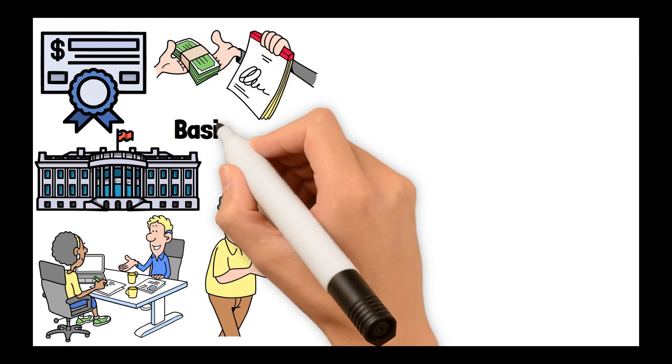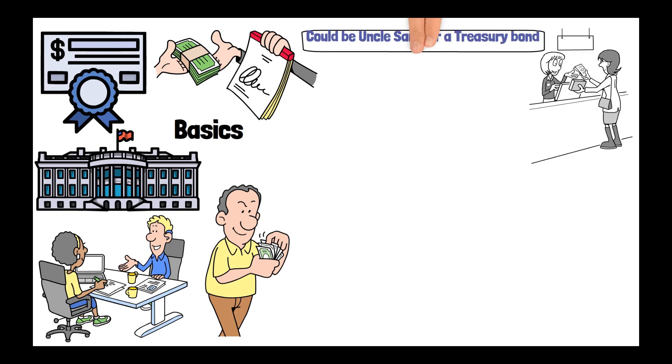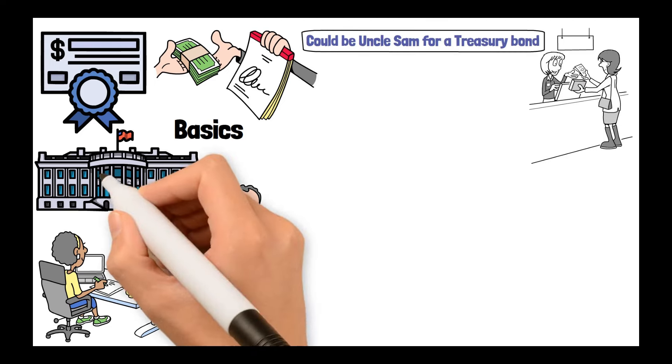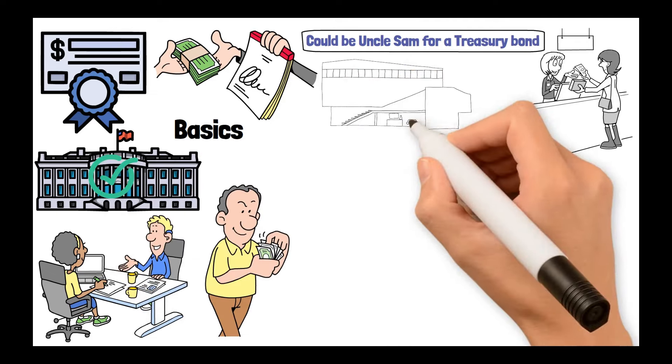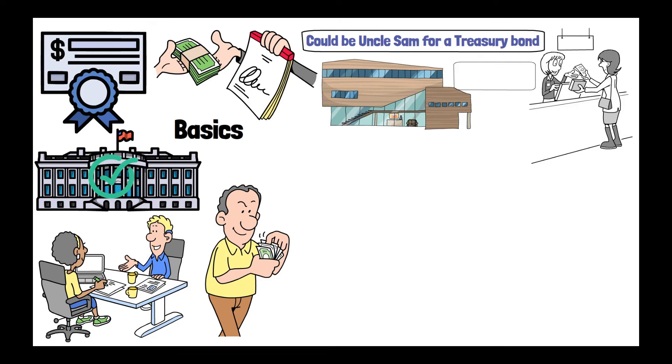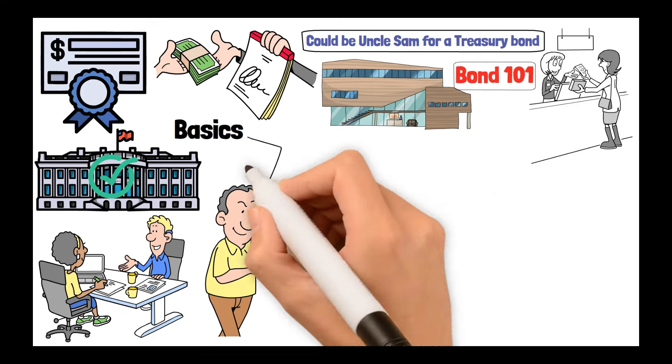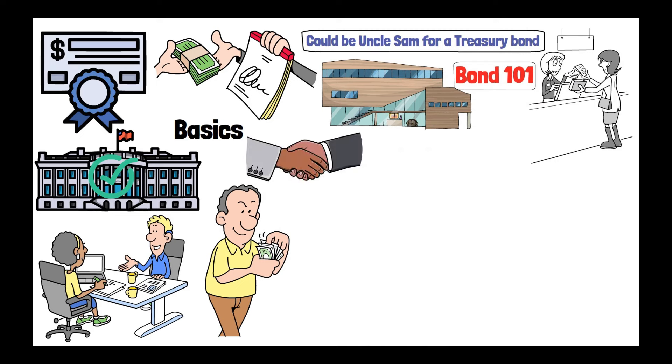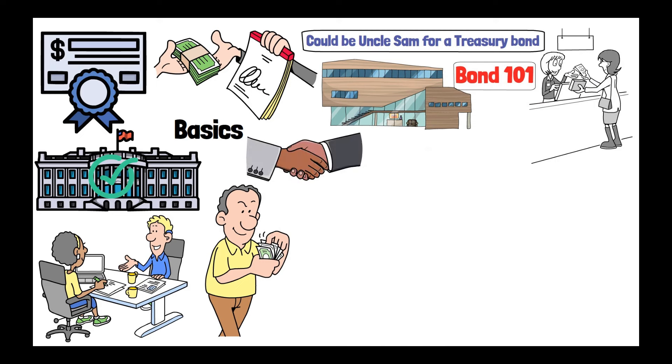It's like a financial love letter, if you will. So, let's start with the basics. A bond is essentially a loan. When you buy a bond, you're lending money to an entity. Could be Uncle Sam for a treasury bond, a state for a municipal bond, or a company for a corporate bond. And here's Bond 101 for you. The issuer promises to pay you back the principal, also known as the face value, on a set maturity rate.